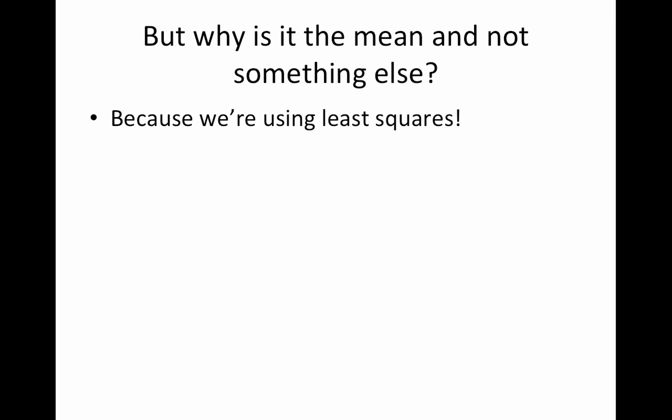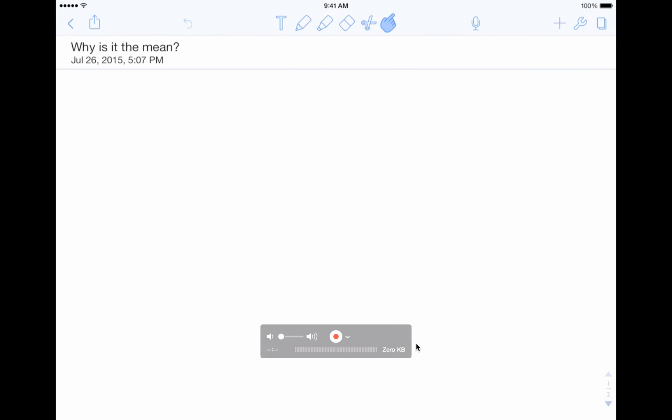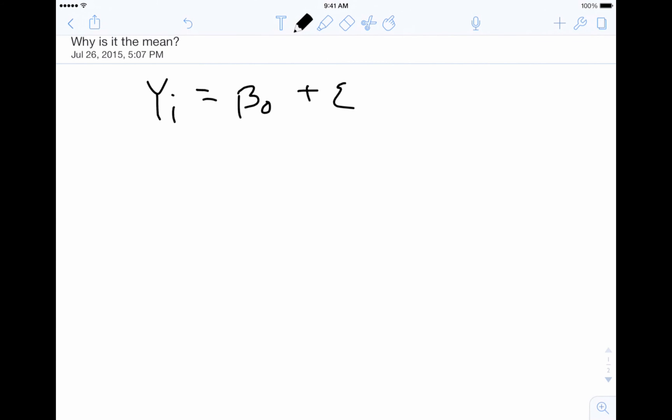Well, because we're using least squares. So it all has to do with the cost function that we're using. And I want to write this out and then I'll do a quick example using a different cost function, not least squares, to illustrate how to make beta naught equal something else. So we are working with yi, if I write the equation out for a single subject, is beta naught plus epsilon, which tells me that yi hat is simply beta naught hat. So if I want to figure out my estimate for a single subject, it is beta naught hat.